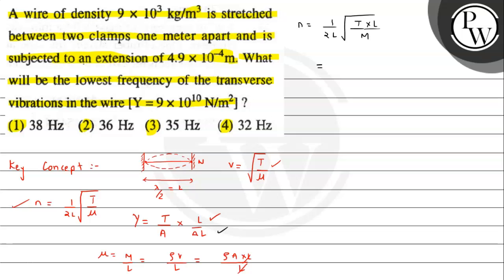T × L from this expression, what can we say? T × L can be written as Y × A × ΔL divided by mass. Mass is density × area × length. We have to consider length here because we are only taking mass into consideration.